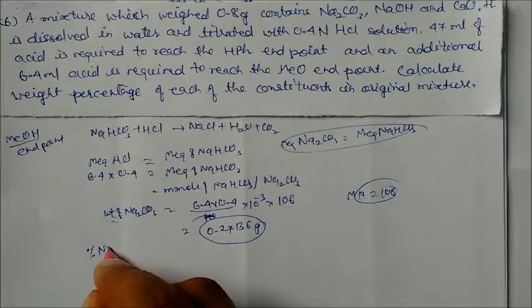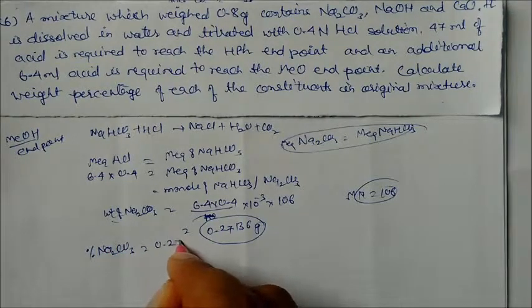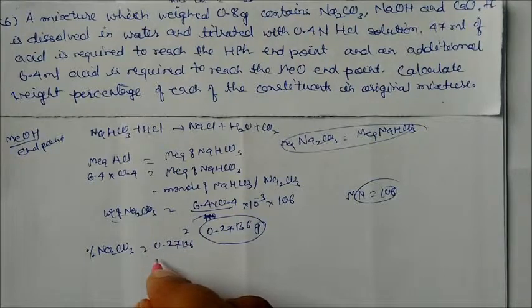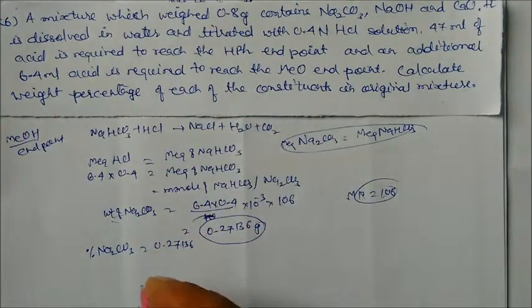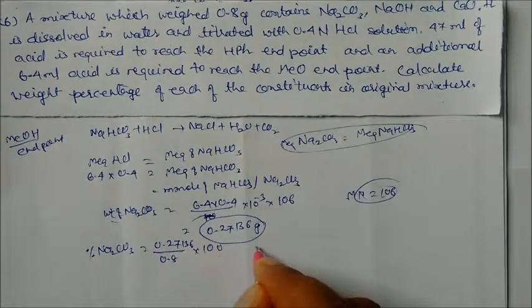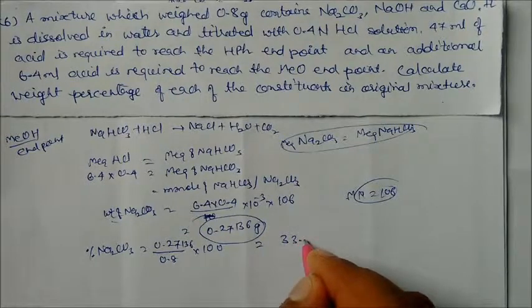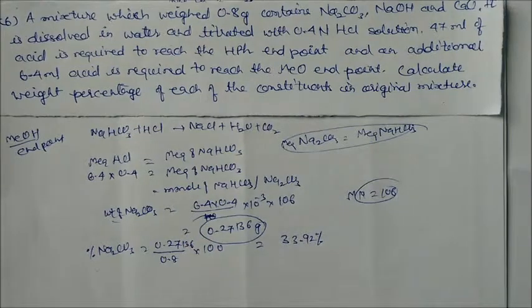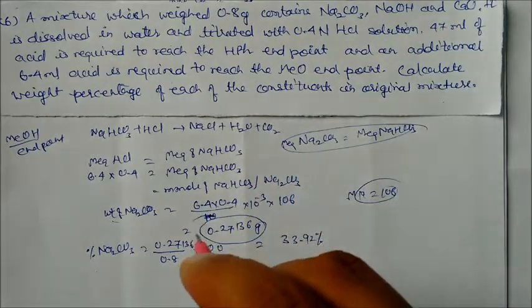The percentage of Na₂CO₃ is: (0.27136 / 0.8) × 100 = 33.92%. This is the mass percentage of sodium carbonate in the mixture.